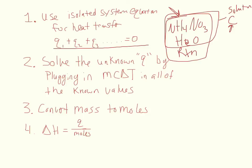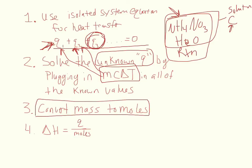So the second part is solve for the unknown Q. Whichever Q you're trying to figure out. Solve for Q3 by plugging in MC delta T into each of these variables. So this would be like mass of the water times the specific heat of water times the change in the water's temperature. This would be the mass of the ammonium salt times the specific heat of the ammonium salt times the change in temperature of the ammonium salt. And so MC delta T can replace the Qs that we know. And then we can solve the unknown Q. Then finally, we want to convert the mass that we're trying to evaluate into moles. And then we can use the simple equation that the change in enthalpy is equal to Q, the heat transfer, divided by the moles.